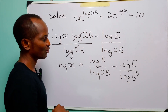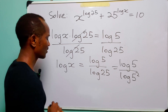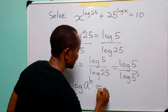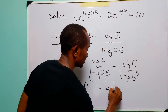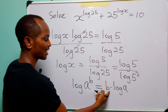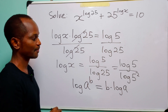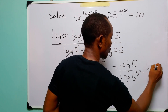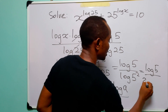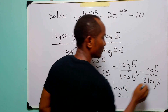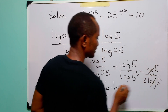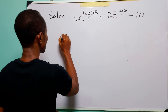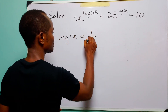Recall the power law of logarithms: when we have log a to the power b, this is equal to b multiplied by log a — that is, the b can come down to become a multiplier. Using this law, we can write this as log 5 divided by 2 times log 5. Log 5 divides log 5, and we have that this is equal to one half. So ultimately, log x is equal to one half.